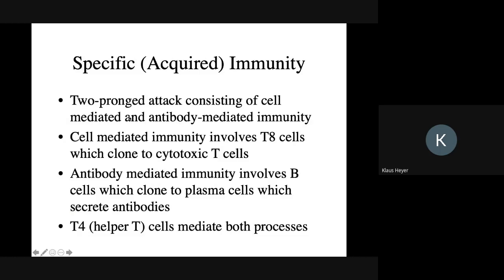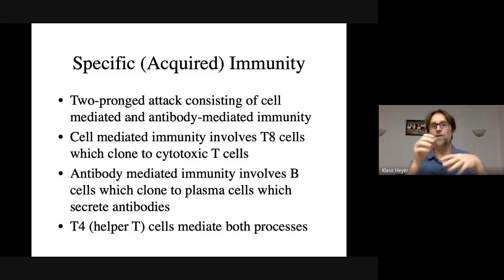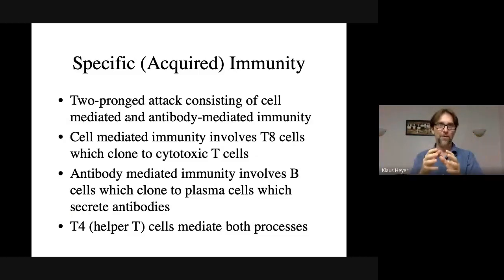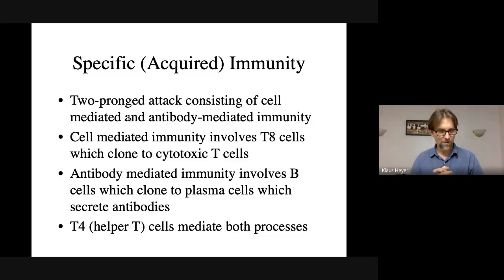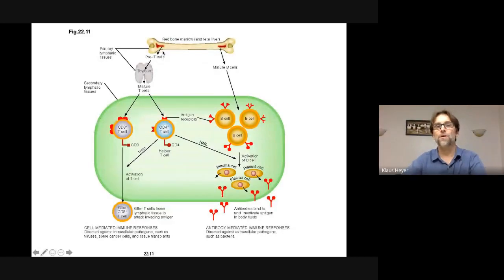There are three types of cells involved in specific immunity: two types of T cells — T4 and T8. T8 cells are involved in cell-mediated immunity, sometimes called CD8 cells. B cells are involved in antibody-mediated immunity — they ultimately make antibodies. In the middle are the T4 cells, also called helper T cells — they act like a command and control center.